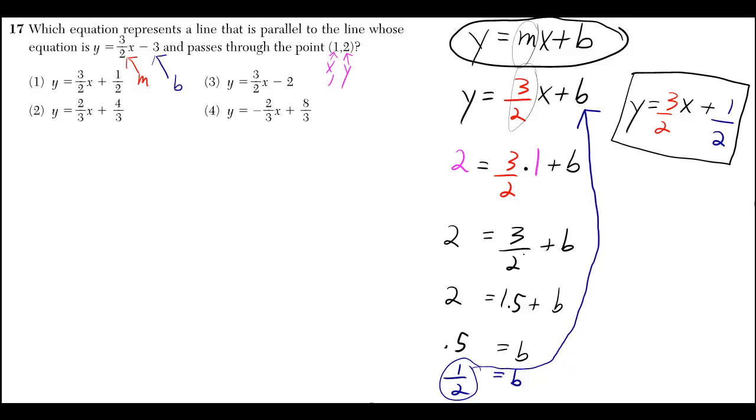Then 3 halves times 1 is 3 halves. And then I change 3 halves to 1.5, and then I subtracted the 1.5 from both sides and I got 0.5. But 0.5 can be written as 1 half.